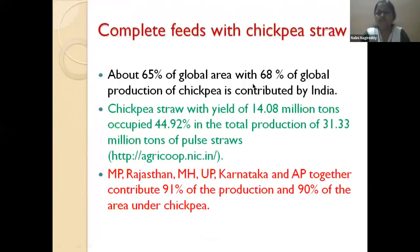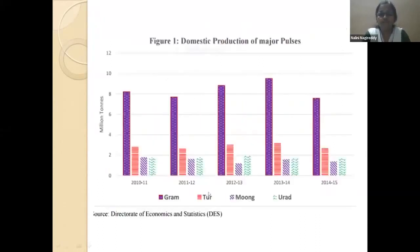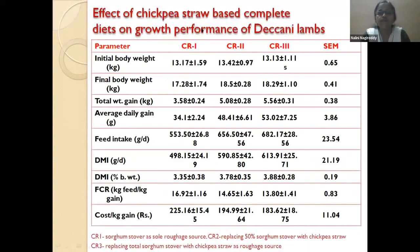Regarding pulse straw-based complete diets: chickpea straw-based complete diets were studied. India accounts for around 68% of global chickpea production, with Madhya Pradesh, Rajasthan, Maharashtra, UP, Karnataka, AP, and Telangana contributing about 91% of production. In Deccani lambs, sorghum stover was replaced with 50% and 100% chickpea straw; average daily gain improved, confirming that sorghum stover can be replaced with chickpea straw.